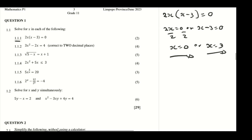And then in 1.1.2, we have 3x squared minus 2x equals 4. We first need to write it in standard form. Remember the question says your solution must be in two decimal places, so you can tell that you have to use the quadratic formula for this problem.